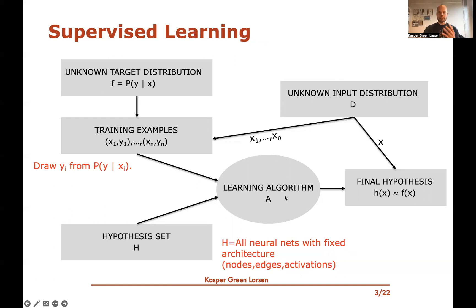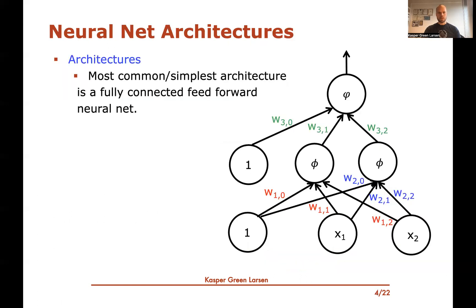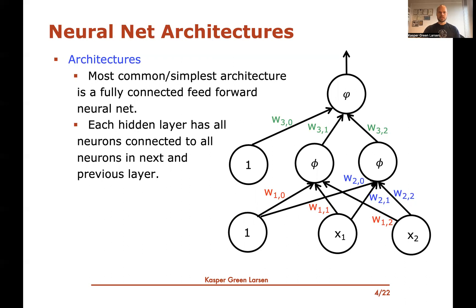We haven't yet seen a learning algorithm for actually picking a good hypothesis. We mentioned briefly that it will be based on gradient descent, but we will get back to that in more detail. The most common or simplest architecture for a neural network is what's called the fully connected feed-forward neural net.